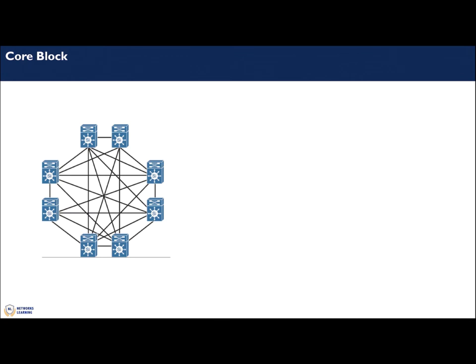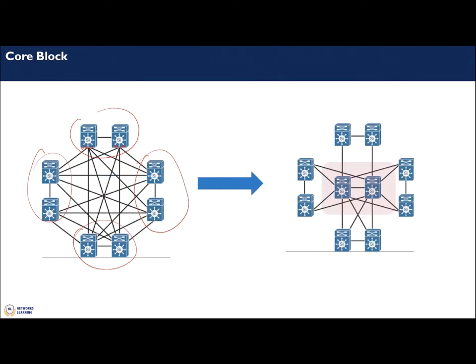One of the reasons you would want a three-tier model is that distribution blocks need to be fully meshed, which requires a lot of links and ports. One approach to reduce the number of inter-distribution links is to introduce a core layer. Instead of connecting to every distribution box, each distribution box only connects to the core, which reduces the number of required links between distribution boxes.